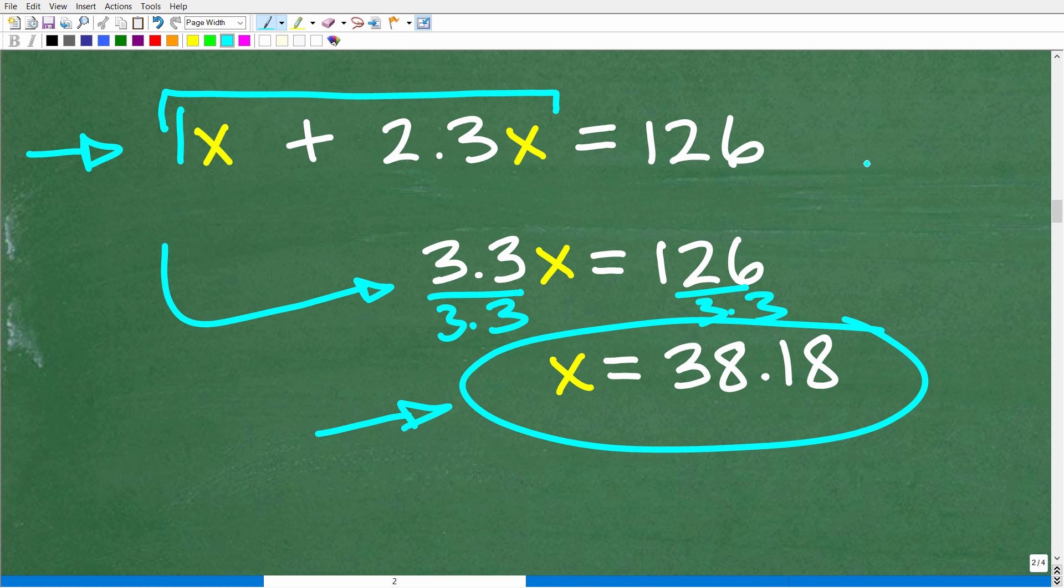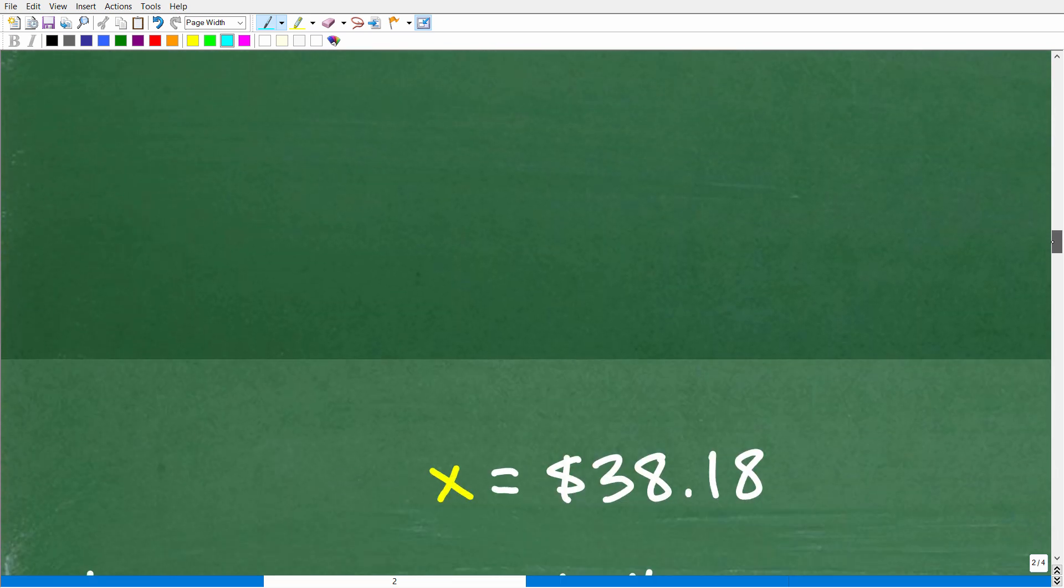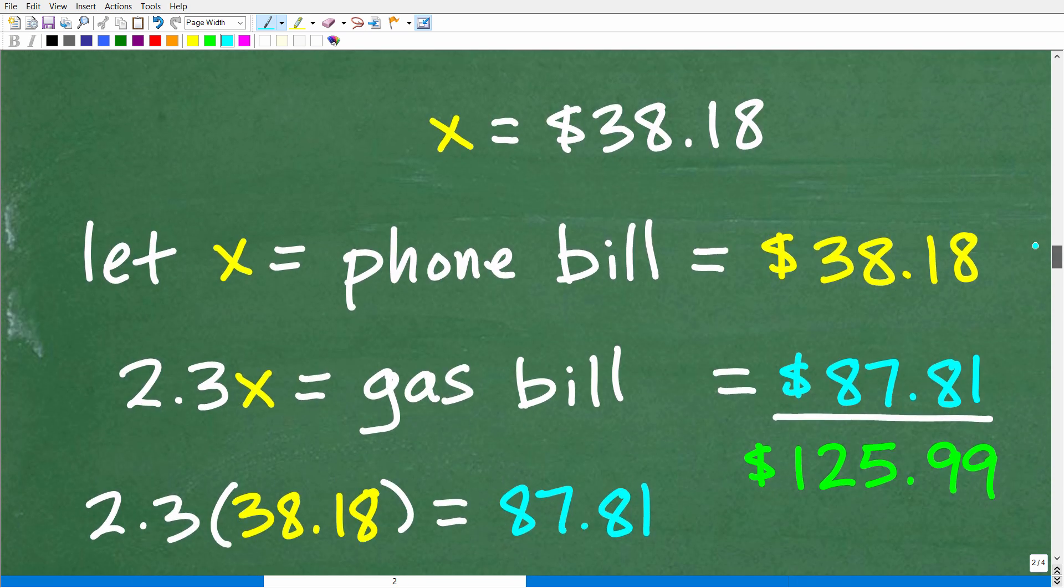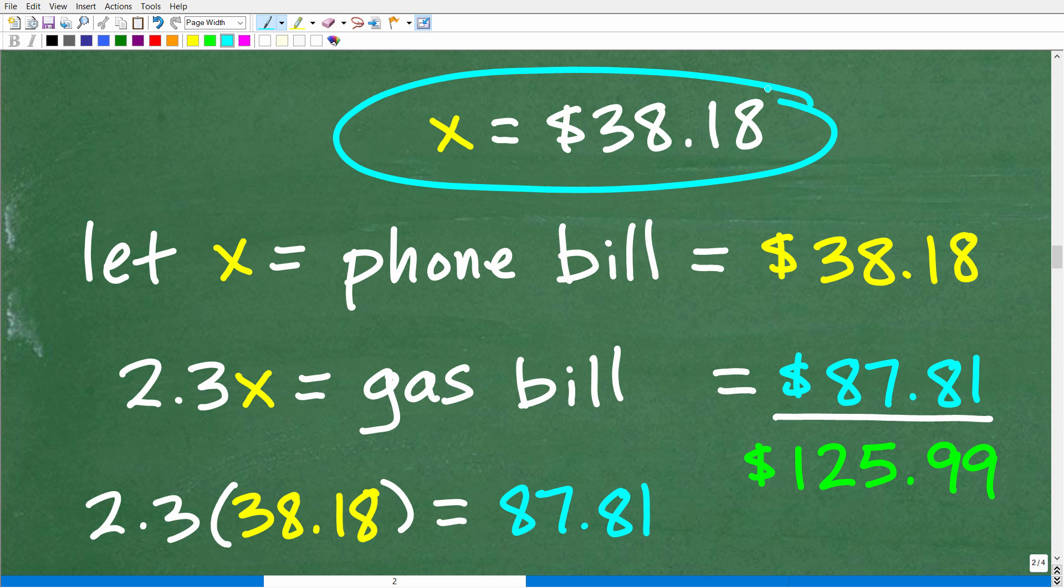Now, oftentimes, a lot of students, a lot of algebra students will be all excited to be like, yes, yes, I solved the problem. And they'll just kind of write down what x is equal to and then they'll stop. Well, we can't stop until we answer the full question. And the full question is, how much was each bill? Okay, so x is equal to 38.18. But to remember that represents Kim's phone bill in dollars. So her phone bill is approximately $38.18.